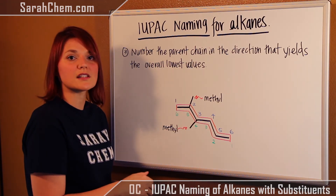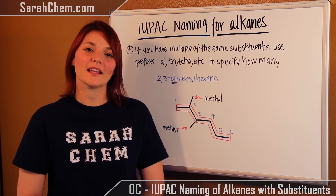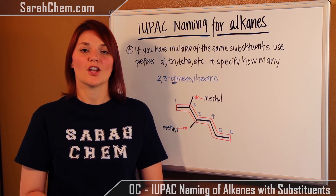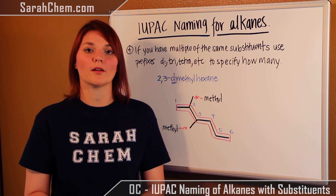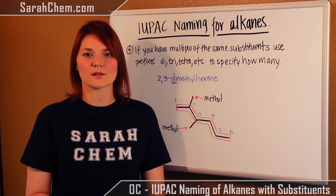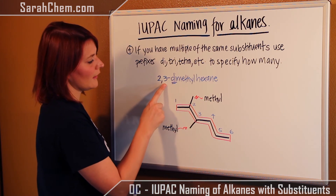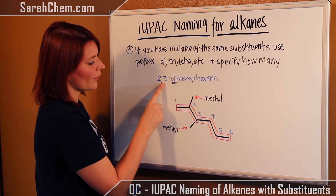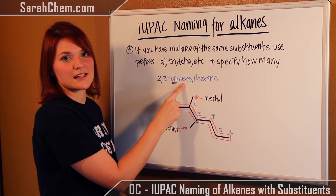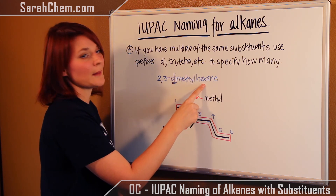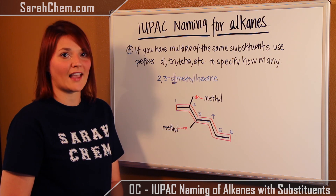Now let's put all the rules together and name the compound. One last rule: when you have multiple identical substituents, you use a multiplying prefix — di, tri, tetra, penta, and so forth — to indicate how many you have. Applying all the rules, the name is 2,3-dimethylhexane. '2,3' indicates the locations of the two substituents; 'di' because we have two methyl groups; 'methyl' is the substituent name; and 'hexane' is the parent chain. That's how you apply all the IUPAC naming rules to name an alkane with substituents.